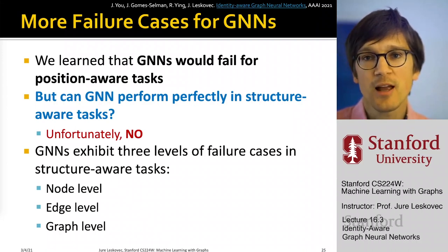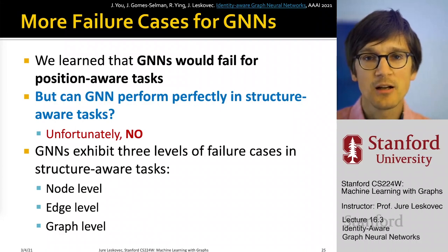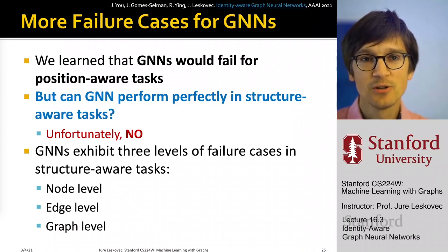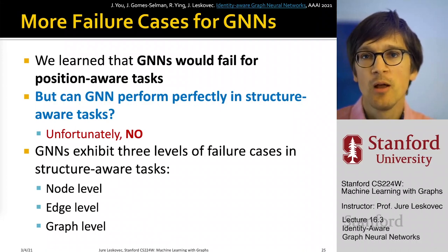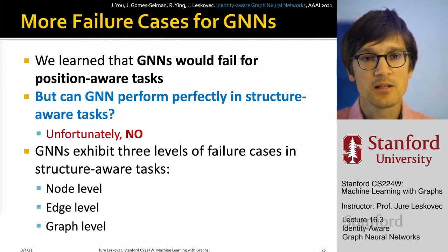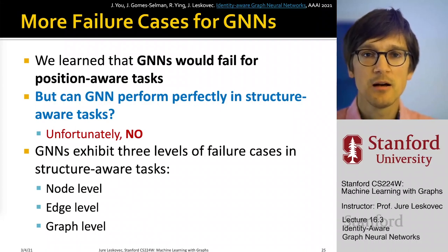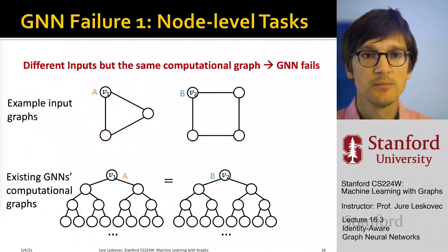All these failure cases are worst-case scenarios that are very intricate in the sense that, due to symmetries, the GNN is going to fail. Perhaps they don't necessarily appear in practice too often, but they may appear in sub-parts of the data and are still very useful to study.